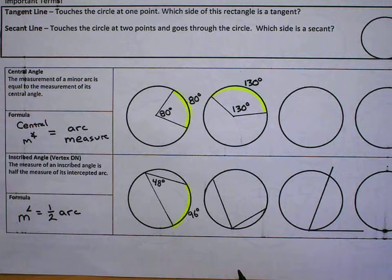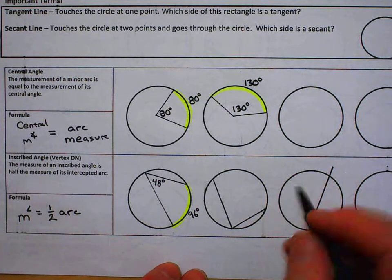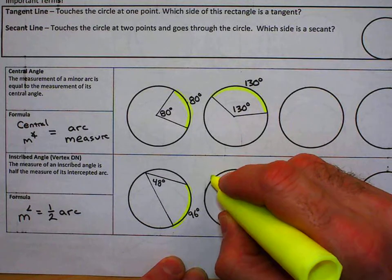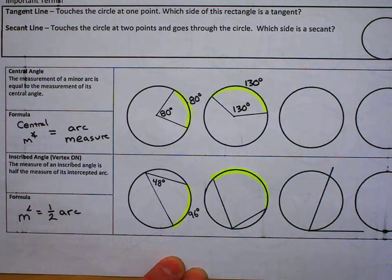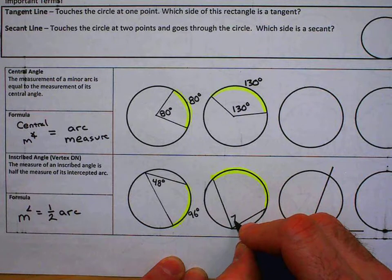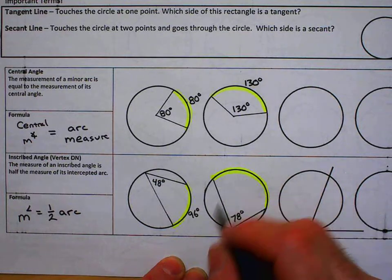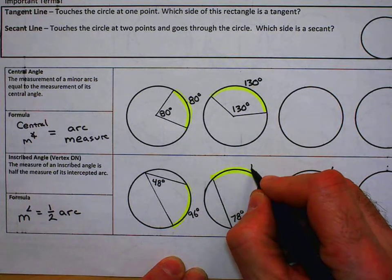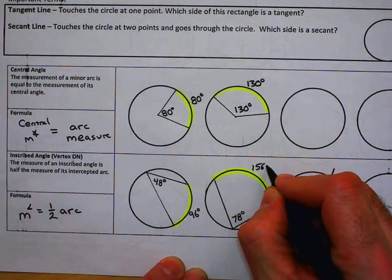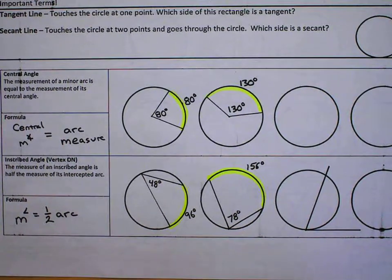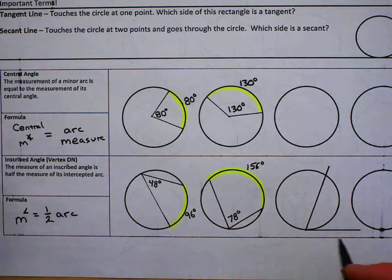On the other hand, if I was given the angle measure and I was looking for the arc here, if I was given the angle being 78 degrees, I know the arc measure is going to be twice—that's going to be 156 degrees. With the same idea, with the vertex being on the circle, you can have a tangent line.